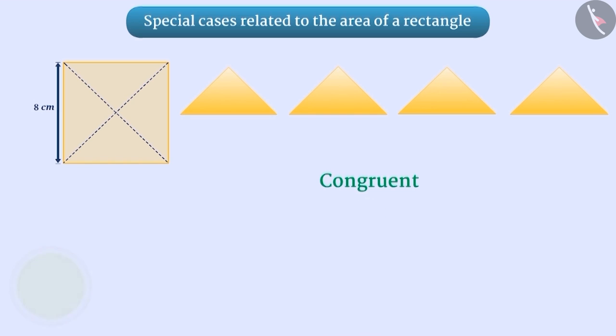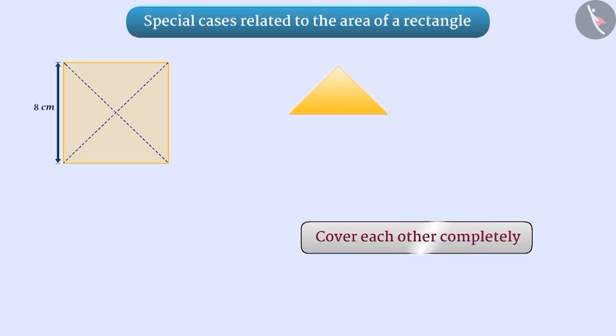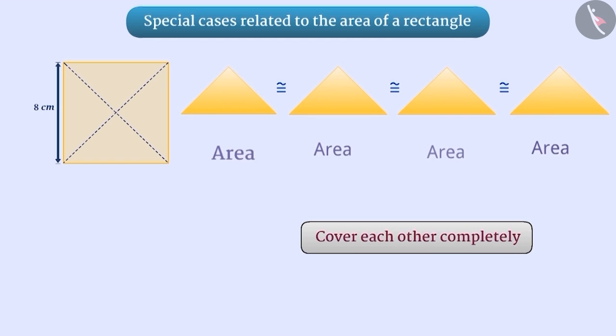If we place all the four triangles one on top of the other, they will cover each other completely and exactly. Therefore, we can say that since all four triangles are congruent to each other, they are equal in area.